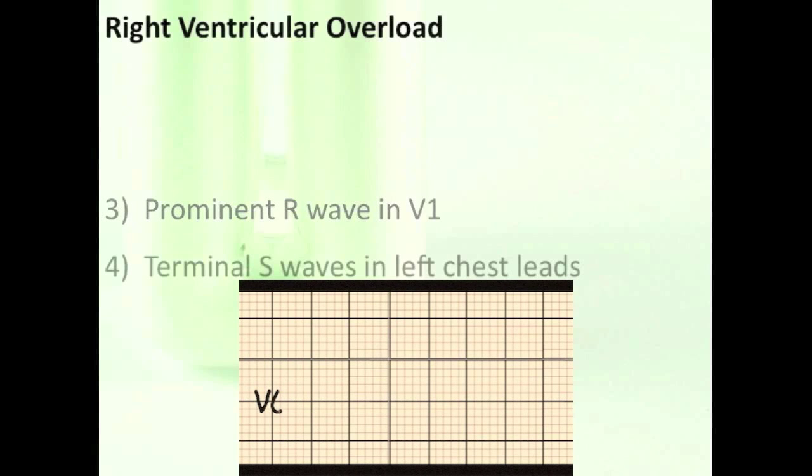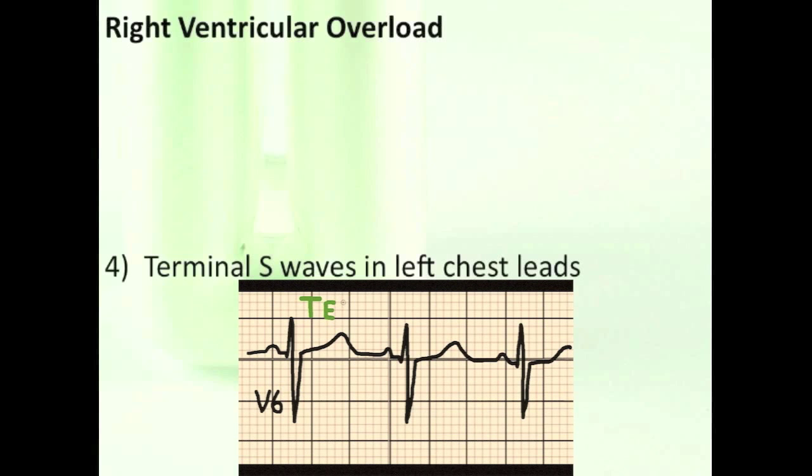Number four, terminal S waves in the left chest leads. So instead of just a QR, where R is typically the terminal wave, there is also an S. So would this affect the transition zone? Yes, of course, there is no true transition zone when terminal S waves appear in the left chest leads.